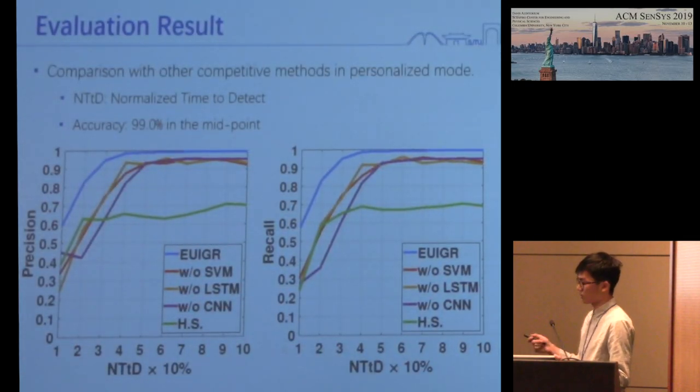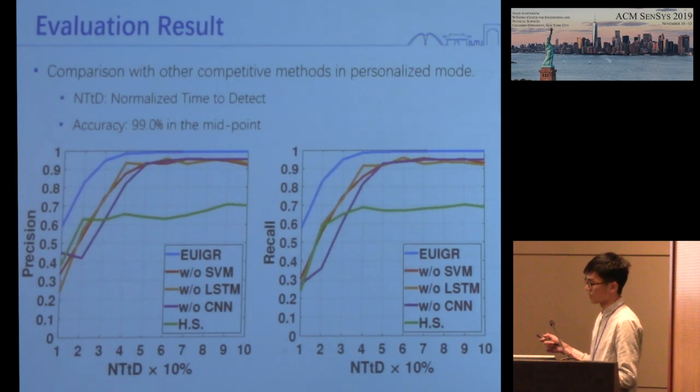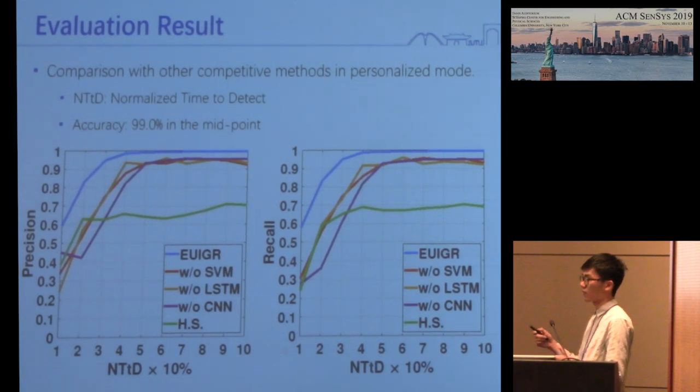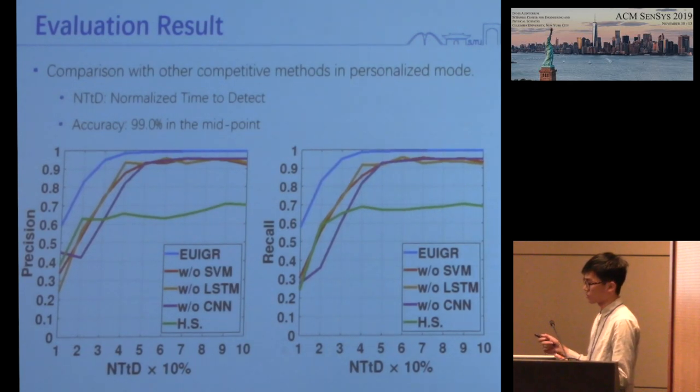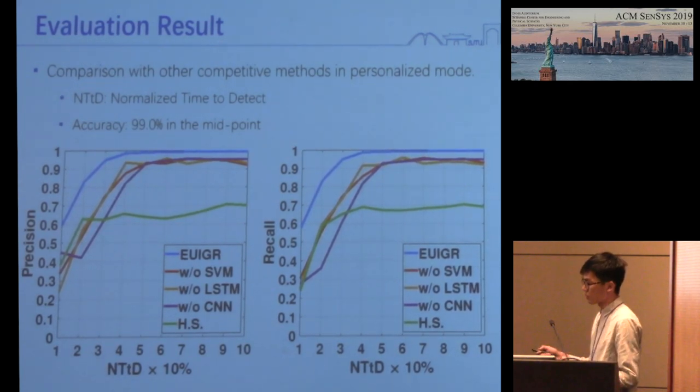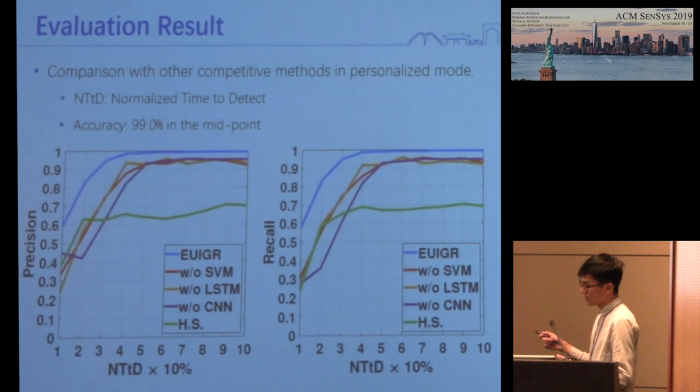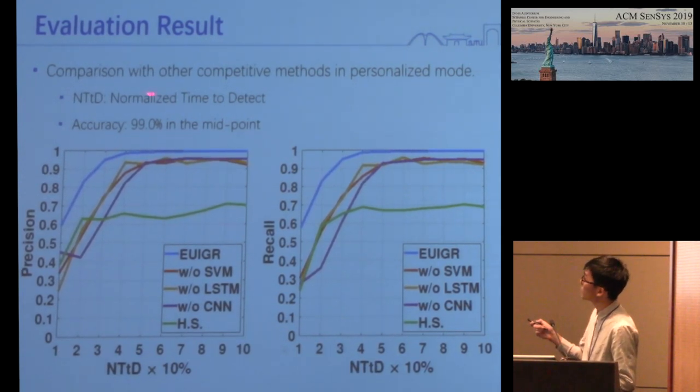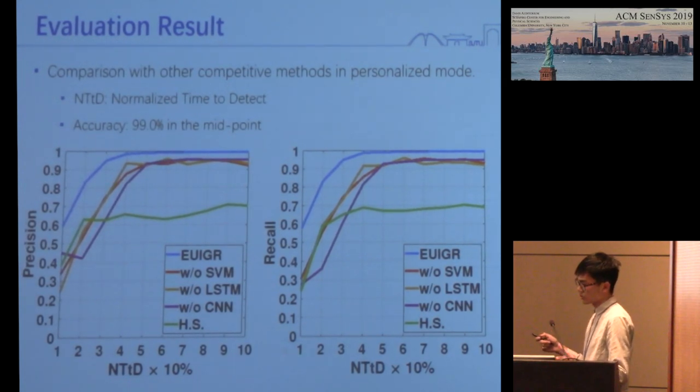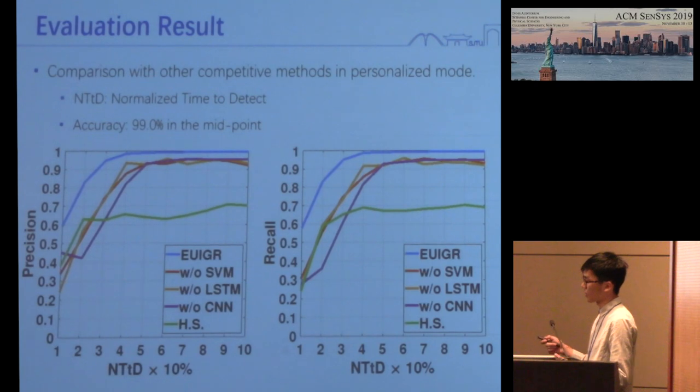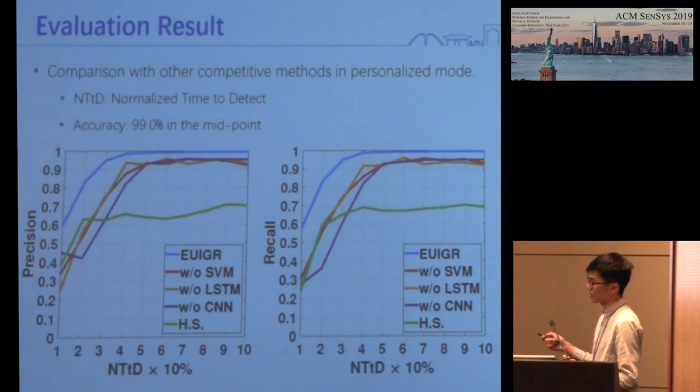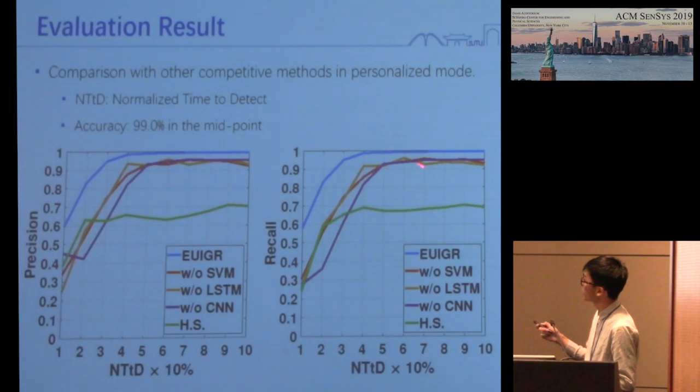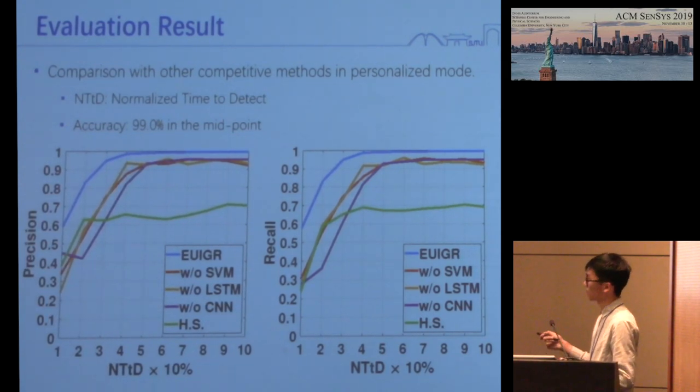To demonstrate the superiority of EUIGR, we compare our method with other state-of-the-art methods in personalized mode. Personalized mode means that each gesture sample may come from any volunteer and samples are performed in a specific environment. The comparison result is shown in the figure, where the average precision and recall for eight gestures are shown as a function of NTDD value. NTDD means normalized time to detect, which is the portion of gesture that has been completed. Apparently, EUIGR achieves better performance than other methods. When NTDD is close to 50%, the average precision and recall are higher than 99%.